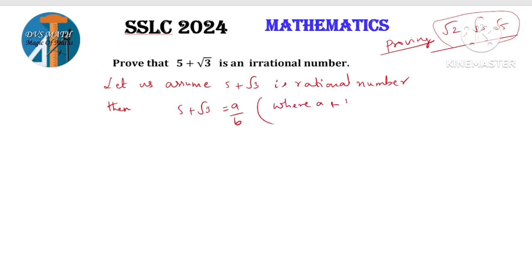Where a and b are co-prime. Co-prime means HCF of a and b is 1. Where a and b are integers.